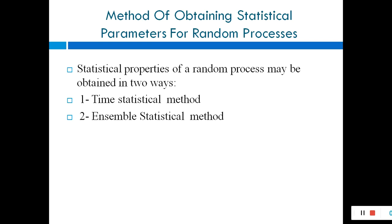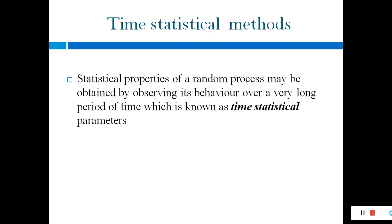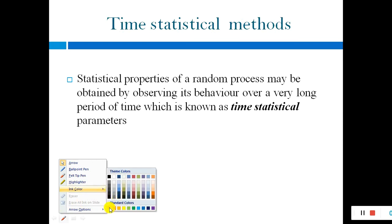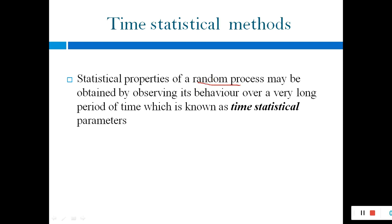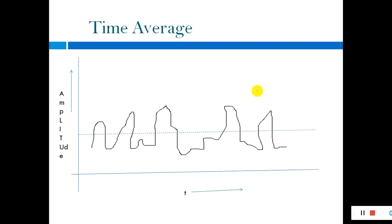We collect statistics by two ways: the time statistical method and the ensemble statistical method. The statistical properties of a random process may be obtained by observing its behavior over a very long period of time. This is known as the time statistical method, because it is based on time. The traffic is designed based on what is happening during that time. The x-axis represents time and the y-axis represents amplitude.